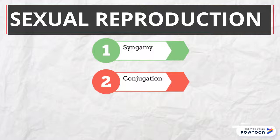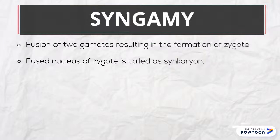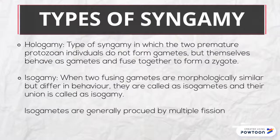For sexual reproduction, there are two types: syngamy and conjugation. Syngamy is a fusion of two gametes resulting in the formation of a zygote. The fused nucleus of the zygote is called a synkaryon. In hologamy, two mature protozoan individuals do not form gametes, but themselves behave as gametes and fuse together to form a zygote.